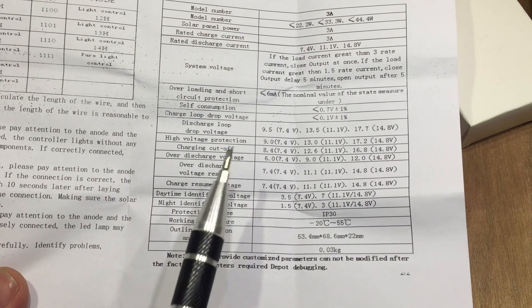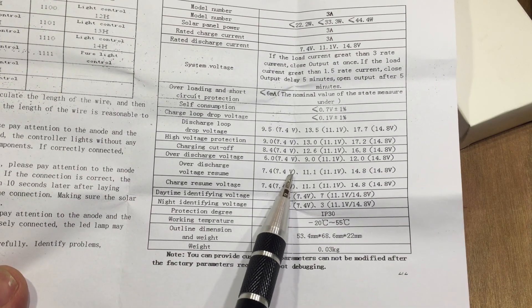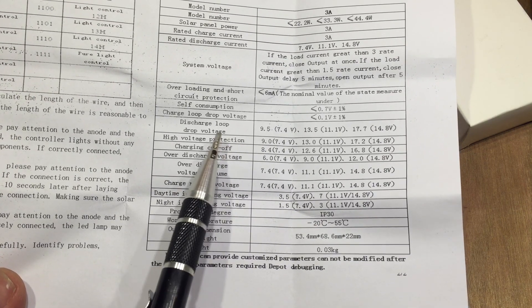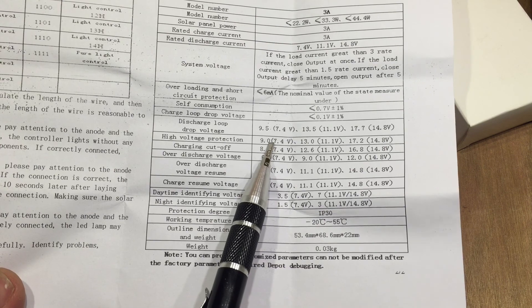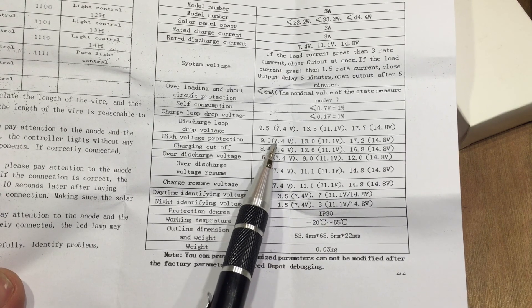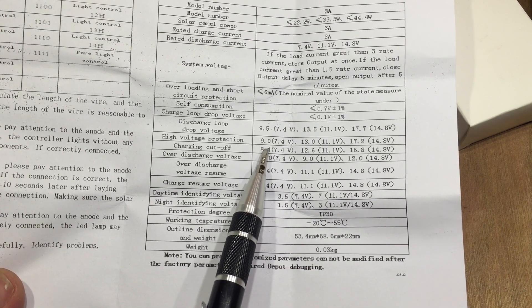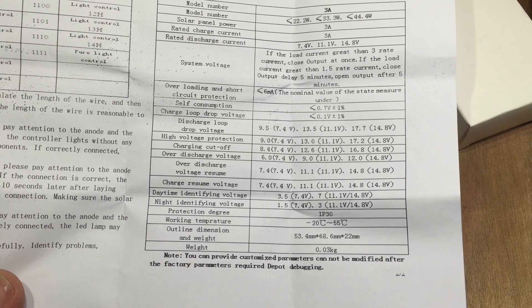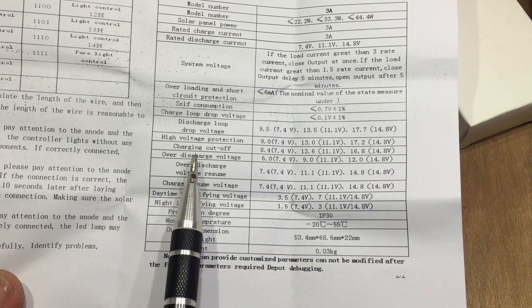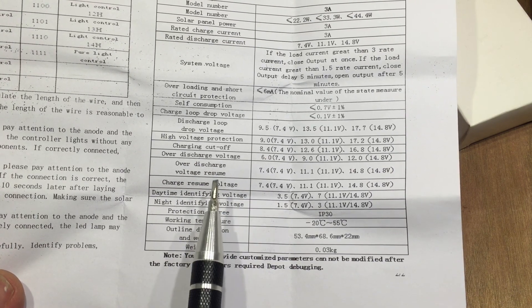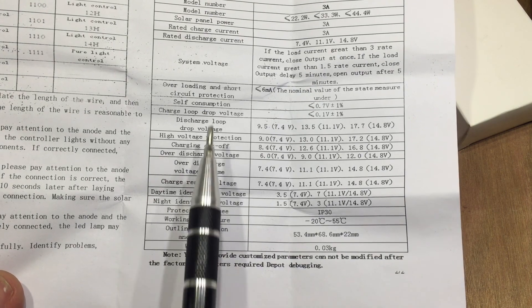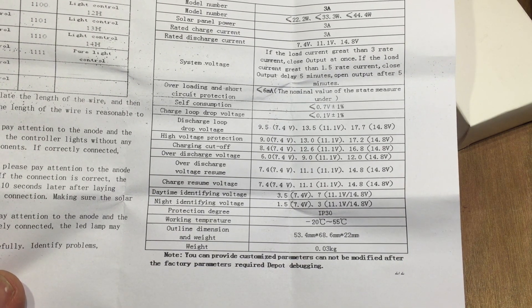So this manual also explains for this model - the 7.4V which is two lithium-ion cells - it's got high voltage protection at 9V, so 4.5V per cell, that seems quite high. Charging cutoff is at 8.4V, 4.2V per cell. Over-discharge voltage is 6V, so 3V per cell. And all the other information you can read there for yourself.